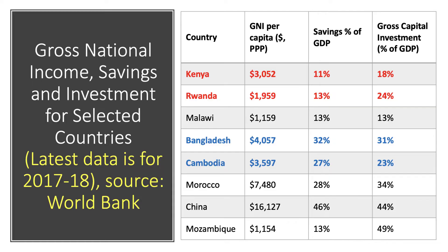Interestingly, in countries such as China, there are very high rates of gross capital investment and a substantial level of gross national savings. Of course, their per capita income is several times higher than countries such as Bangladesh and Cambodia.